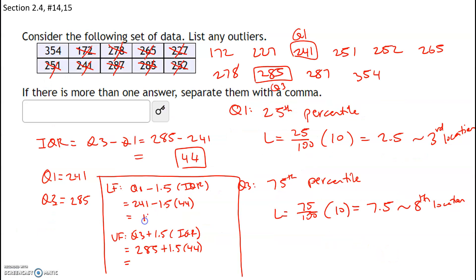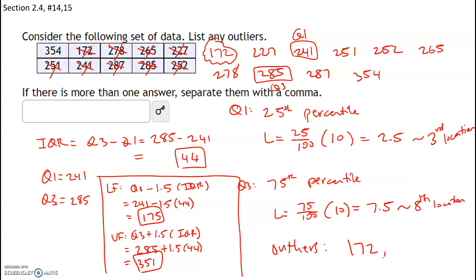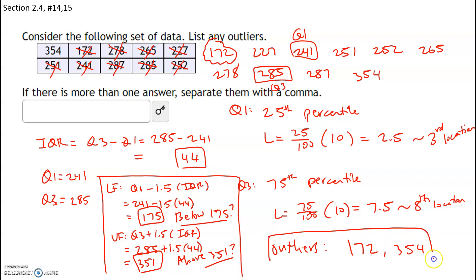Lower fence is 175 and upper fence is 351. Outliers are any values below the lower fence or above the upper fence. Do I have anything below 175? Yes — 172 is below 175, so that's an outlier. Do I have anything above 351? Yes — 354 is above 351, so that's an outlier too. My final answer: the outliers are 172 and 354.